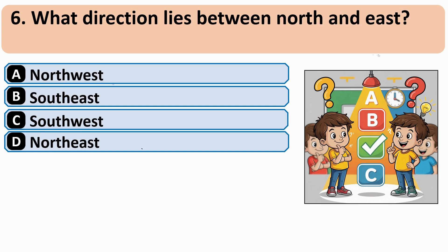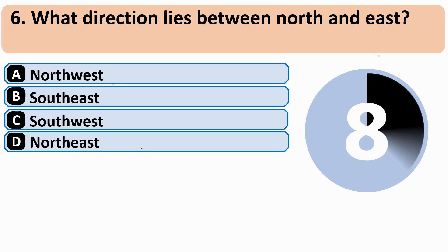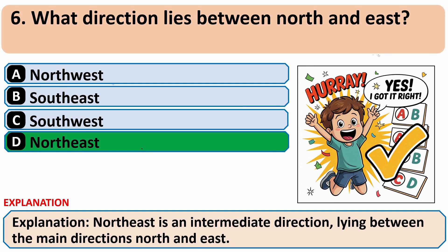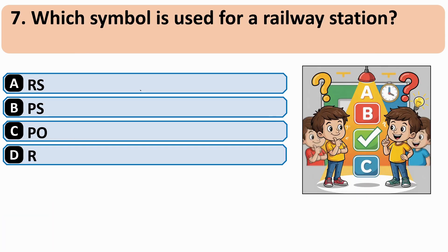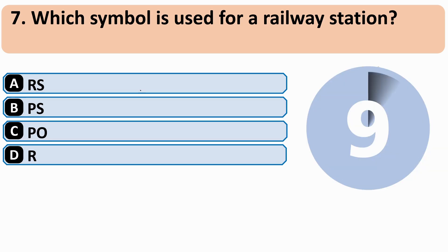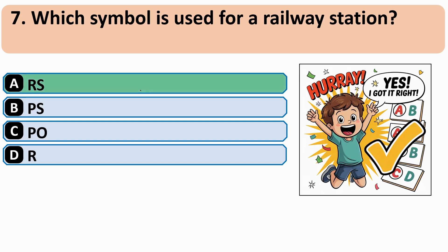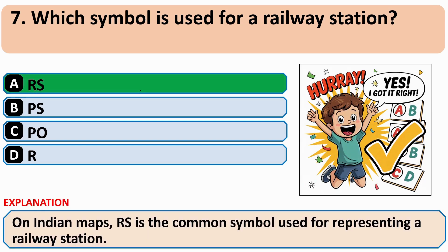What direction lies between north and east? The correct answer is D — north-east. Which symbol is used for a railway station? The correct answer is A — RS.